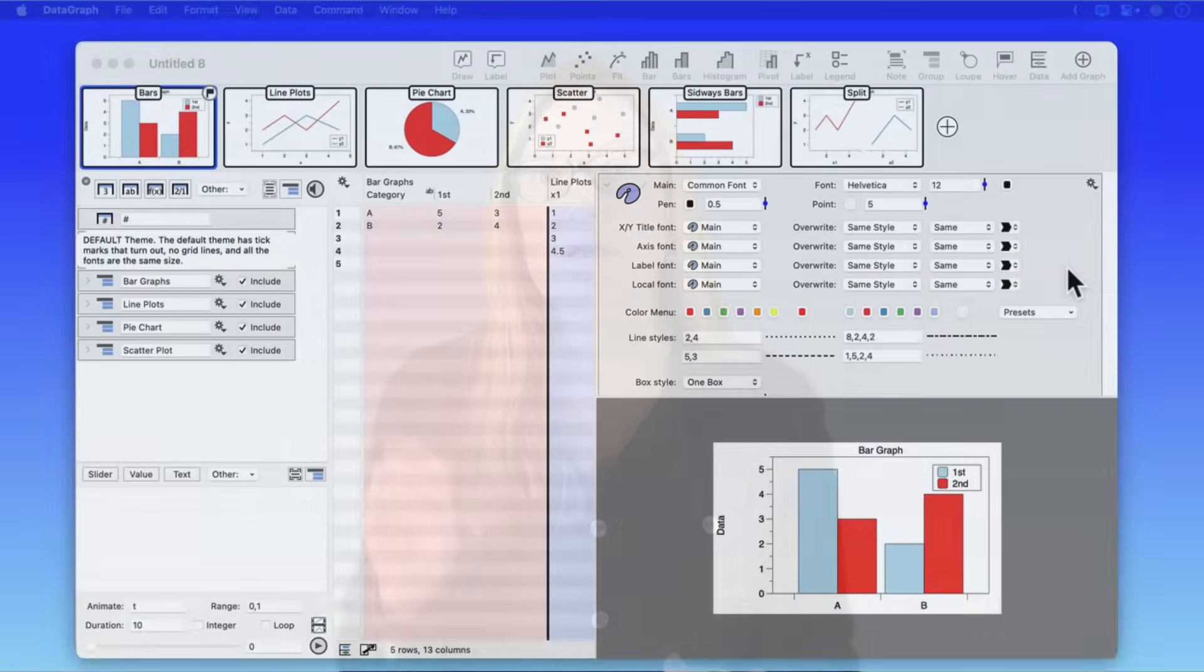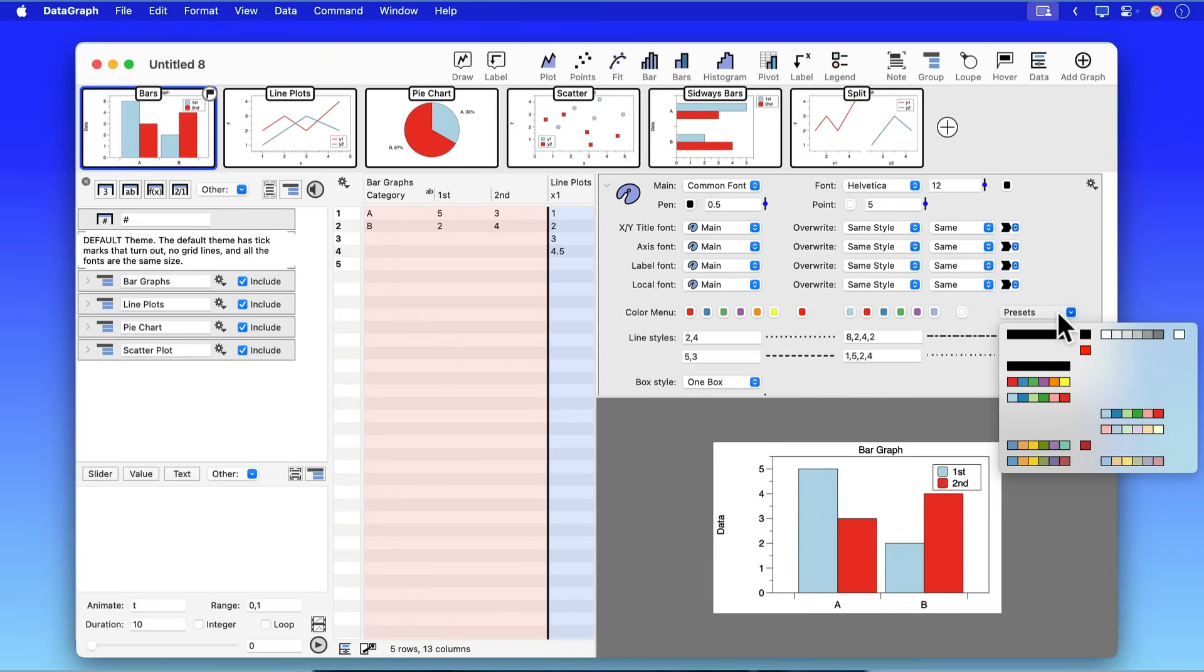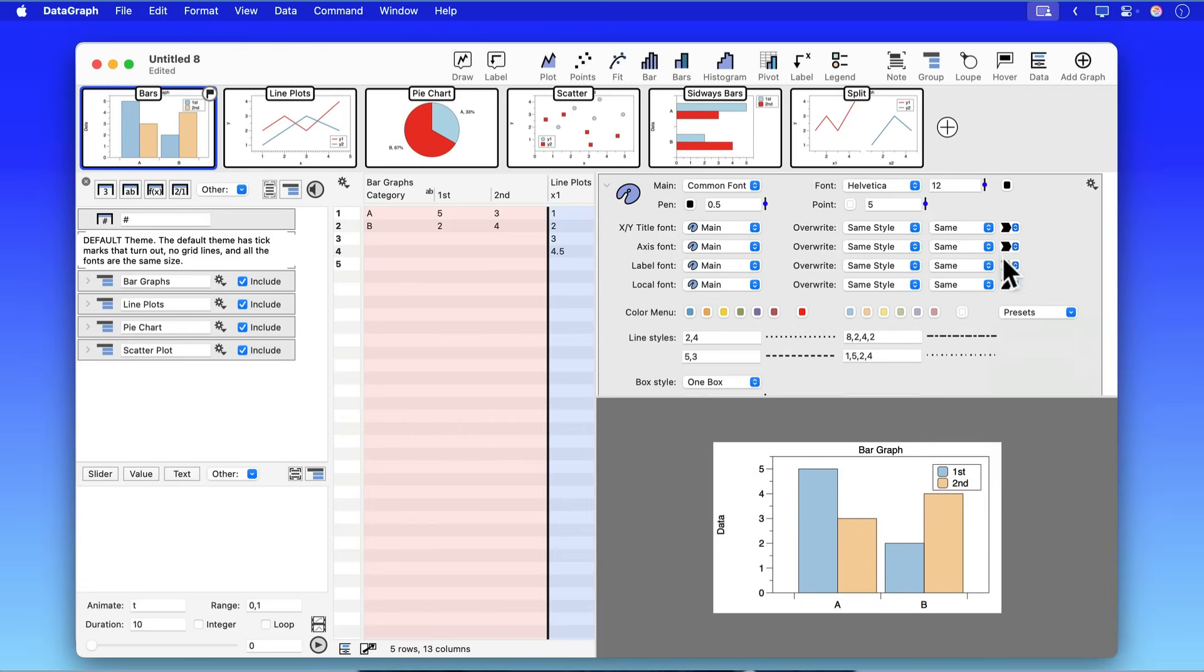There's also another big benefit to using the colors in the style settings and that is once you've set custom colors in your style settings and note that there are also some presets there that you can choose from, once you have these you can apply those colors to other graphs really easily.